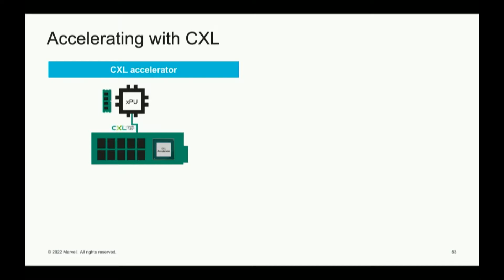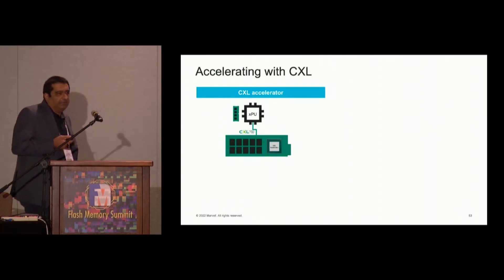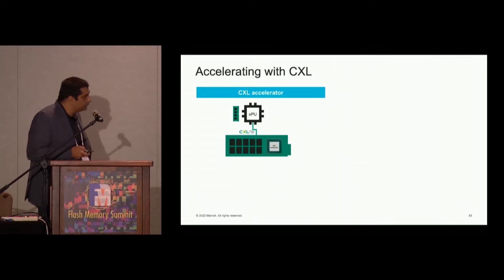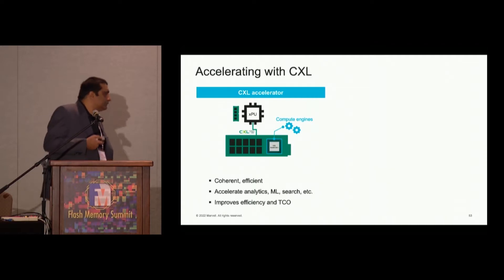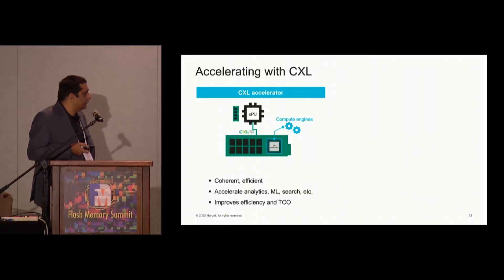There are other evolving CXL use cases beyond memory — specifically acceleration on CXL links. One bottleneck is having to go back on a relatively slow link to the CPU after processing something in an accelerator. You can take that one step forward and add the accelerator into the CXL memory controllers themselves, so some data can be processed locally where memory is directly connected, and then send the final results back. These can be cache coherent, doing things like analytics, machine learning, and searching — improving efficiency and TCO in various data center use cases.